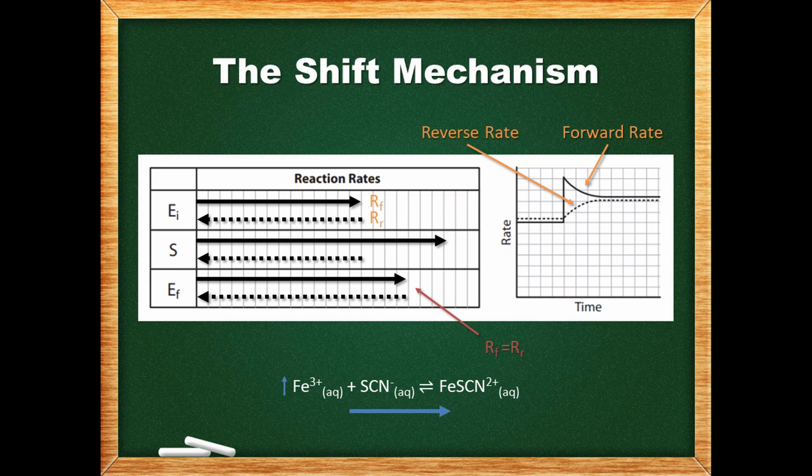Now let's turn to the rate versus time graph on the right. The spike is when the stress is added to the system and the forward rate is increased. After the spike, we see how the reverse rate rises and the forward rate decreases to become equal.